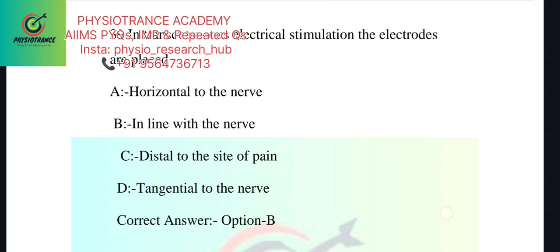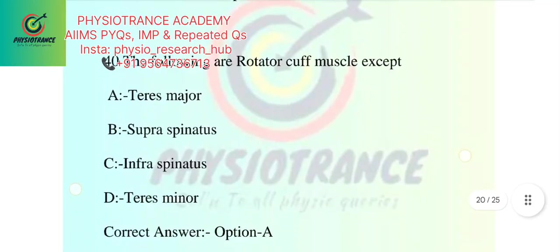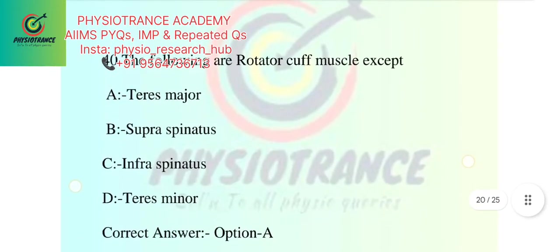The correct option is B - In line with the nerve. Next question: The following are rotator cuff muscles except Teres major, Supraspinatus, Infraspinatus, Teres minor.